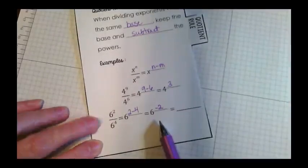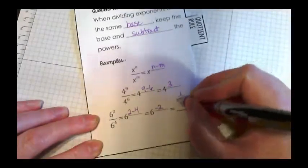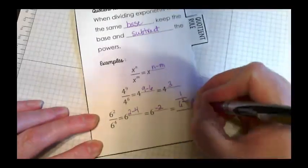And when we have negative exponents, we turn this back into a fractional representation. So this would end up being one over six to the second power.